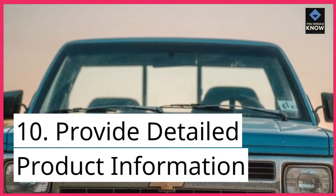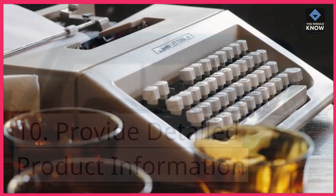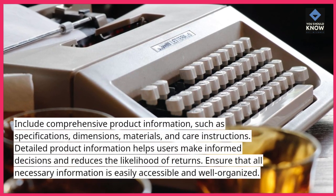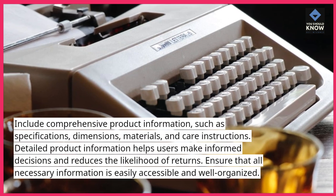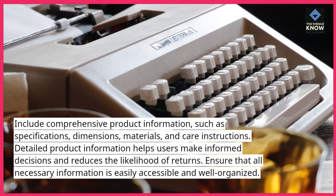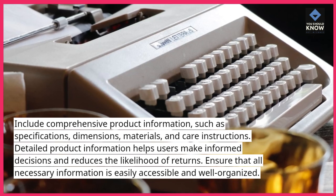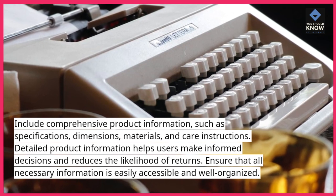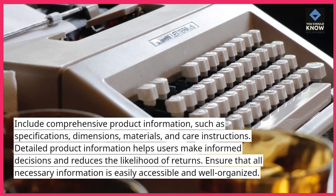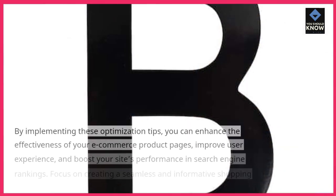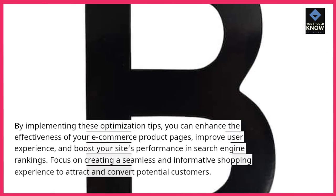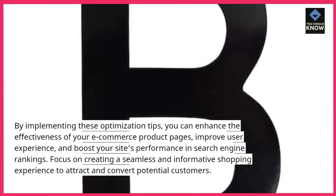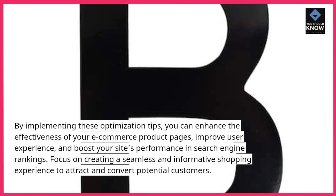10. Provide detailed product information. Include comprehensive product information, such as specifications, dimensions, materials, and care instructions. Detailed product information helps users make informed decisions and reduces the likelihood of returns. Ensure that all necessary information is easily accessible and well-organized. By implementing these optimization tips, you can enhance the effectiveness of your e-commerce product pages, improve user experience, and boost your site's performance in search engine rankings.